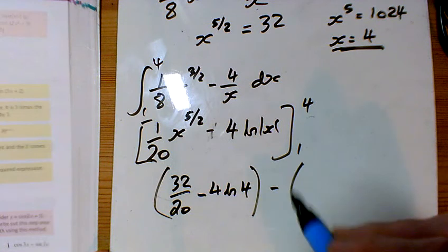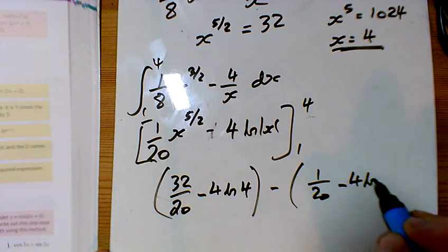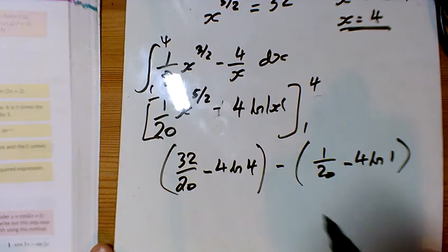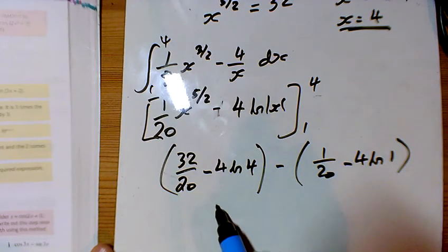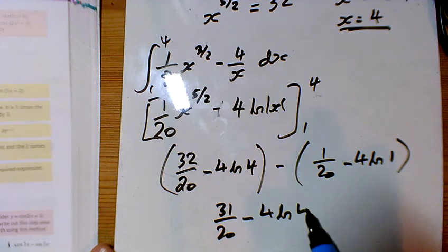And putting the 1 in there, I'm just going to get 1 over 20 minus 4 ln 1. So taking that away, I've got 31 over 20 minus 4 ln 4.